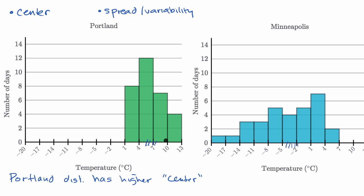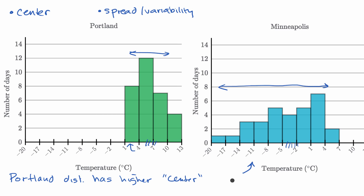Now, what about the spread or variability? Looking at range, Portland has nothing below one degree Celsius and nothing above 13, giving about a 12-degree range. While Minneapolis looks like it has approaching a 27-degree range. Using the same scale on the horizontal axes, Minneapolis is just a much wider distribution, so the Minneapolis distribution has more spread and higher variability.